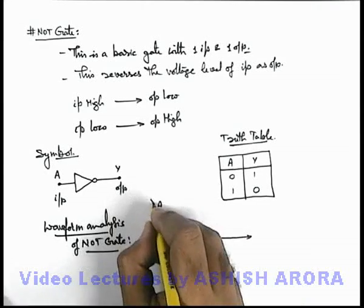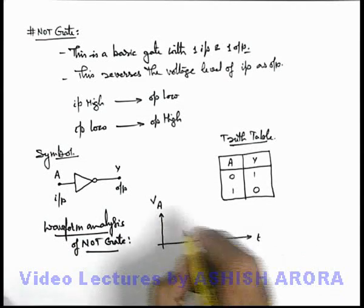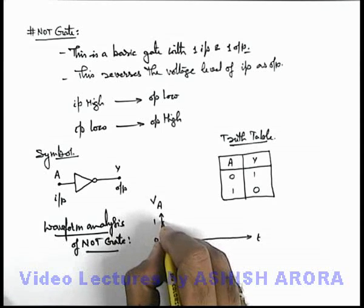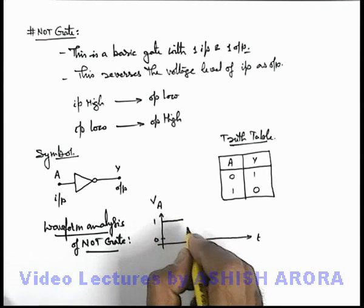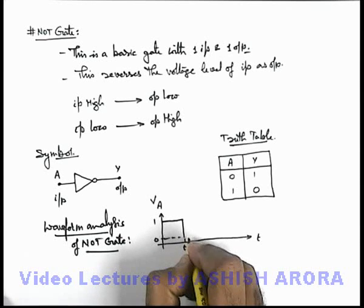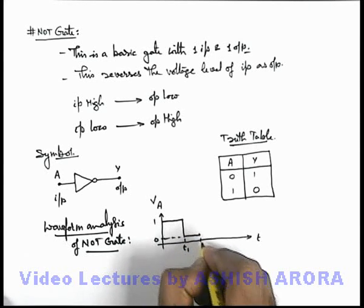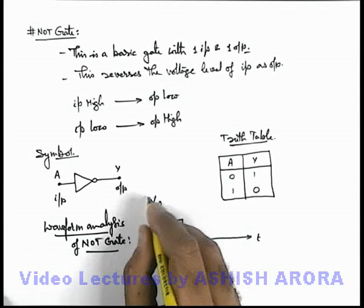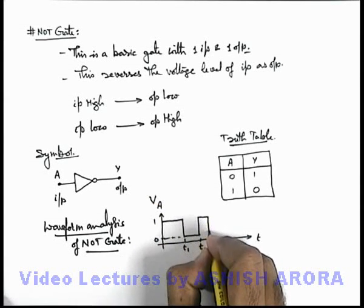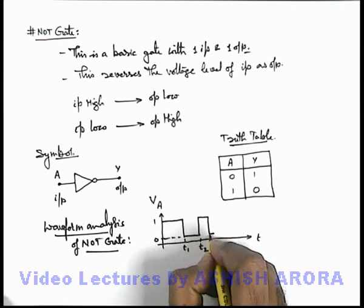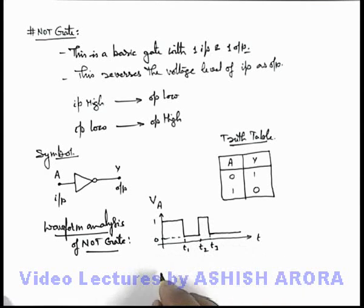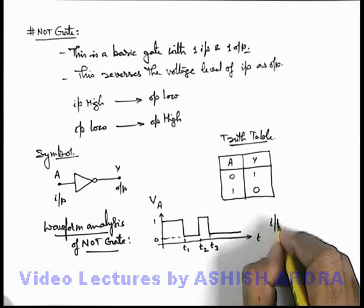Say the voltage at terminal A is V_A, and it is varying with time between the logical states zero and 1. For some time t1 it remains high, then up to time t2 the voltage at A is low, that is in zero state, then again it becomes high for some time, then again it drops at time t3 and continues to be low. This is called the input waveform.